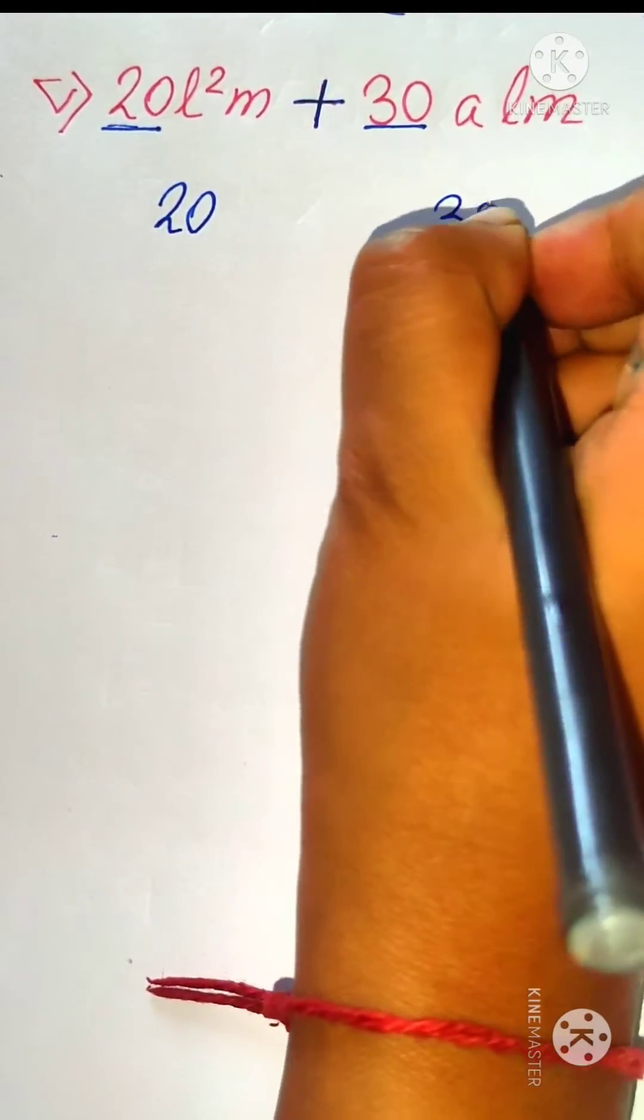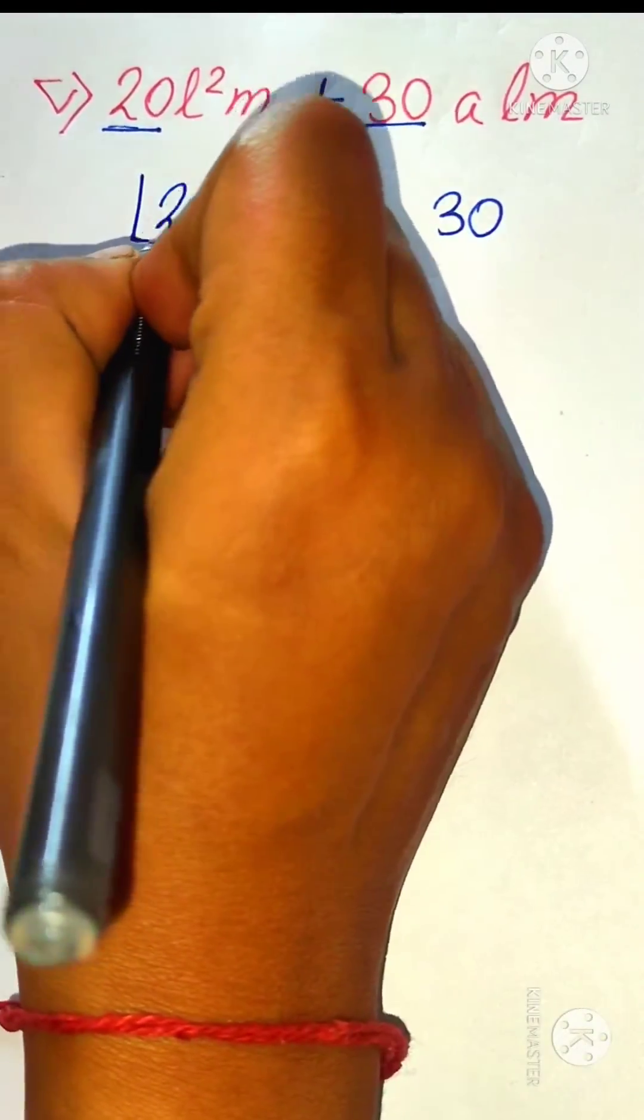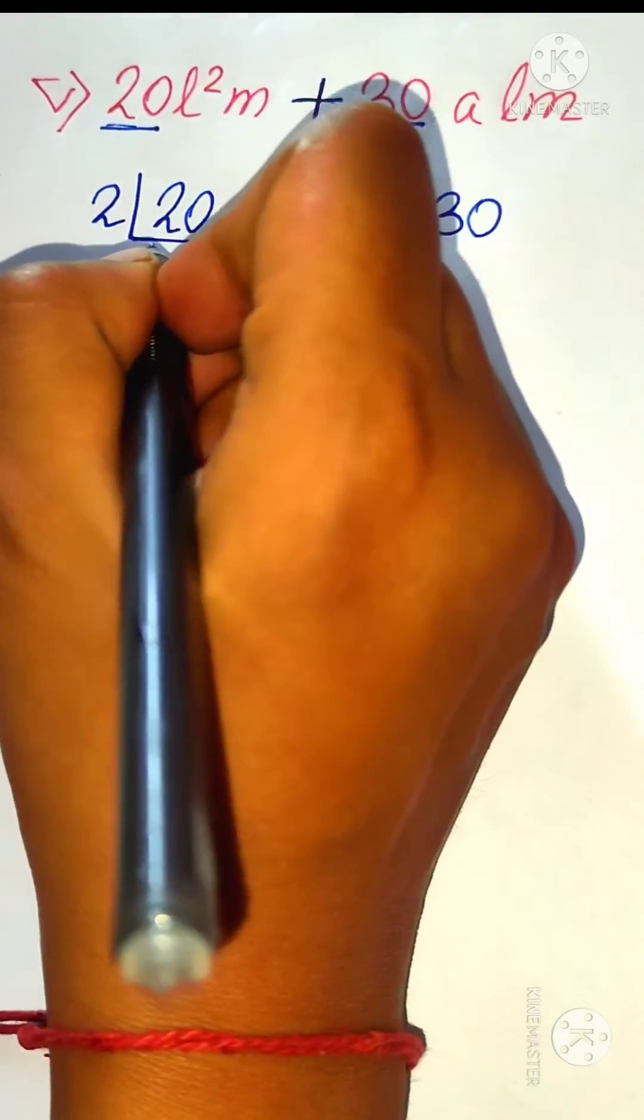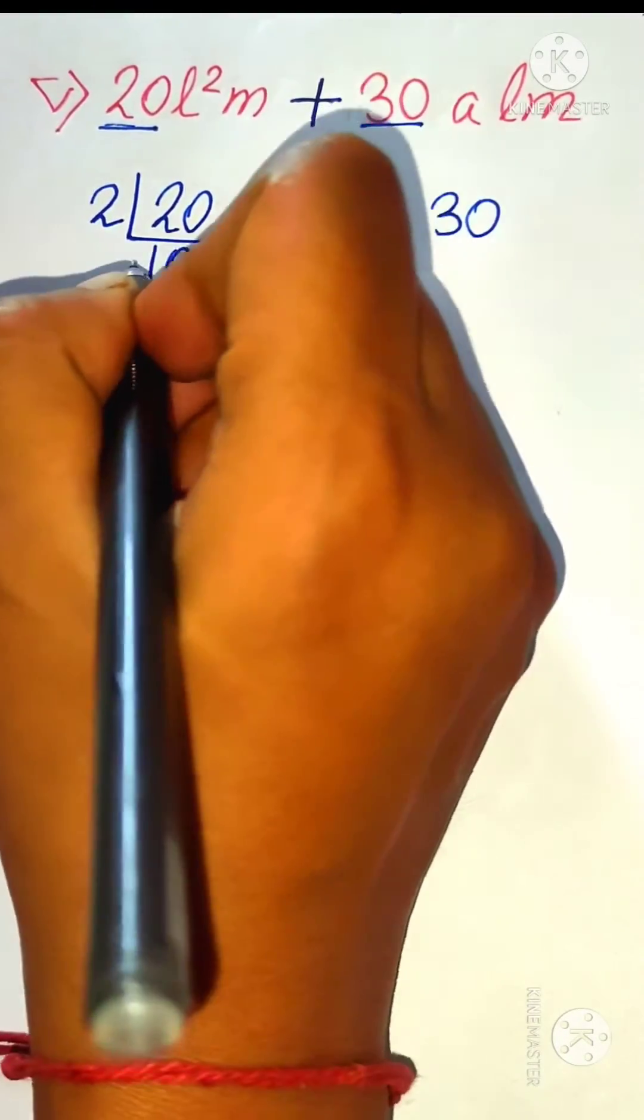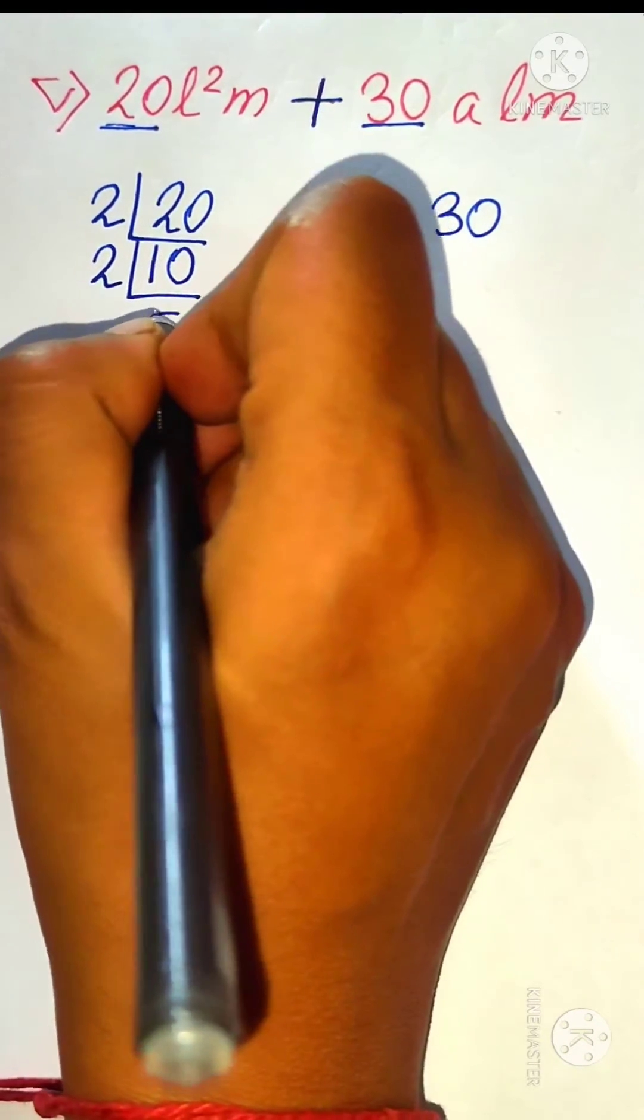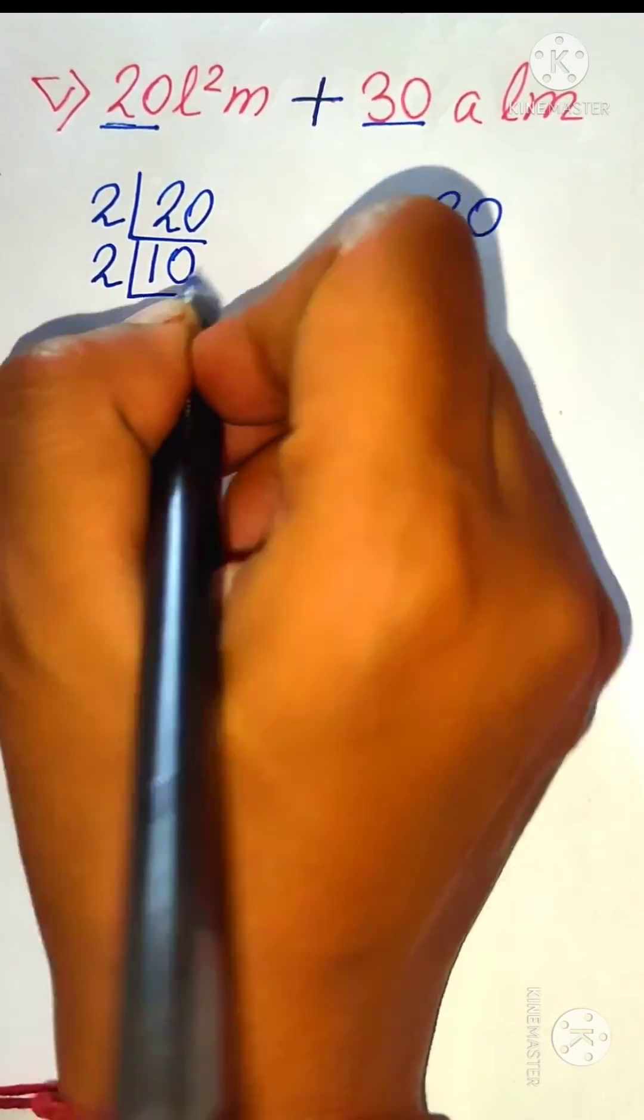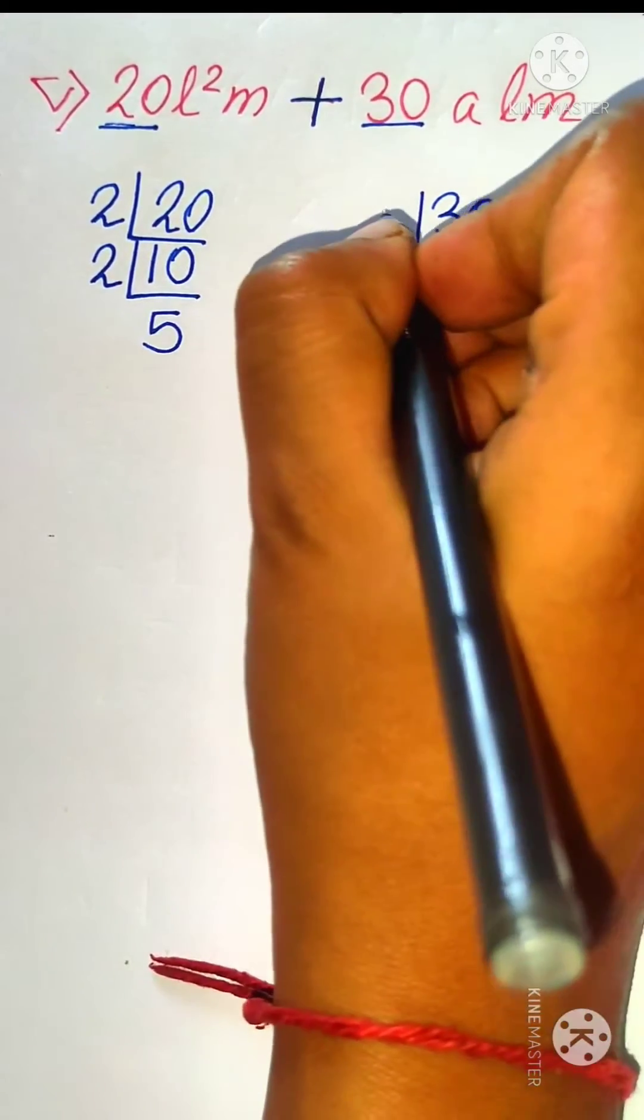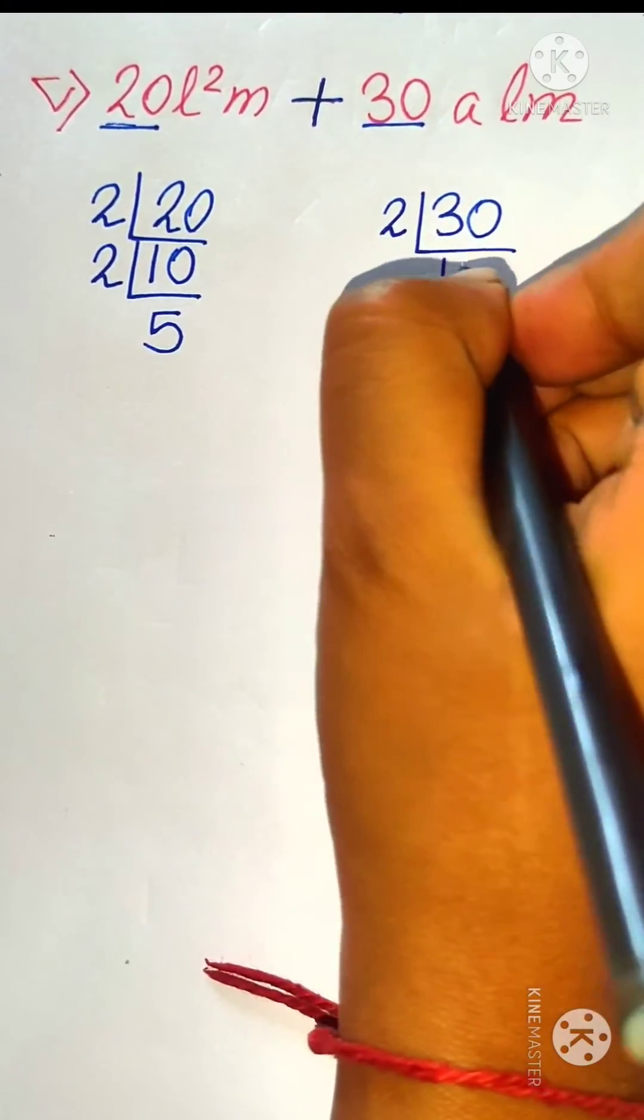So we will first find out the prime factorization of these two numbers. 20 is divisible by 2, that is the smallest prime number. You will get here 10. 2 is 20. Again, 10 is divisible by 2, so 5 times 2 is 10. 5 is a prime number, so stop here.